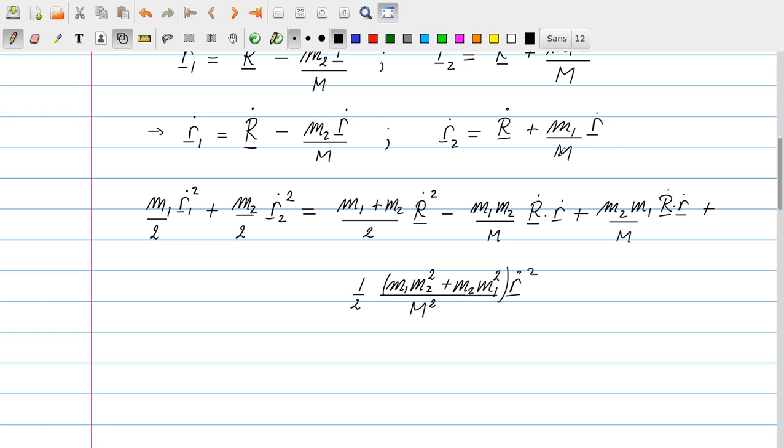And then we first have a term which is proportional to the capital R dot, and that term is easy to see. It's m1 plus m2 divided by 2. Then we have a term proportional to capital R dot lowercase r dot, and that has a pre-factor of m1 m2 over M and a minus sign. And from this I have a similar term, but that occurs with a plus sign. These terms are equal but opposite, equal in magnitude, opposite in sign, and so they nicely cancel.